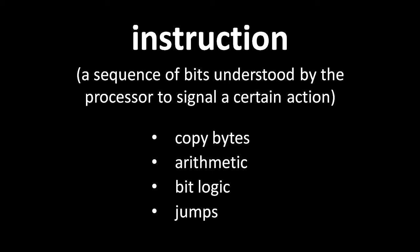Still, every CPU needs instructions for a few essential tasks. First, every CPU needs one or more instructions for copying bytes from one location to another, mainly from one part of memory to some other. Second, every CPU needs instructions for doing basic arithmetic — at the very least addition and negation.